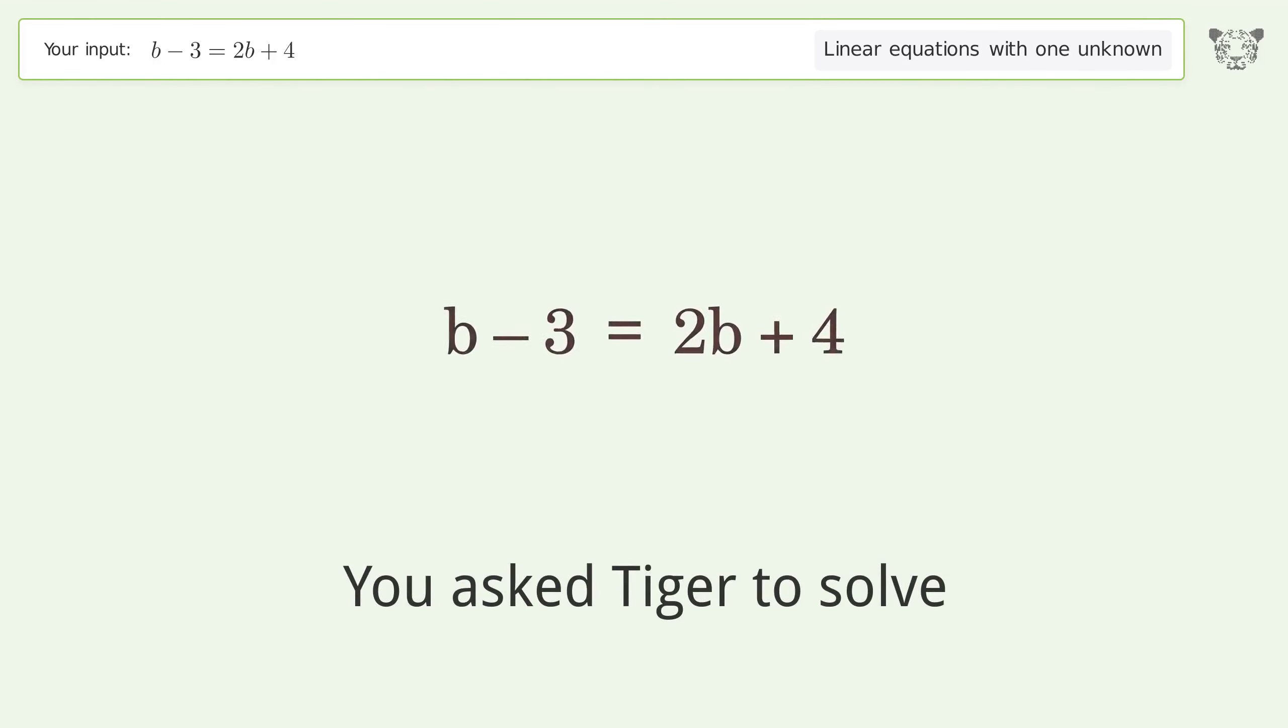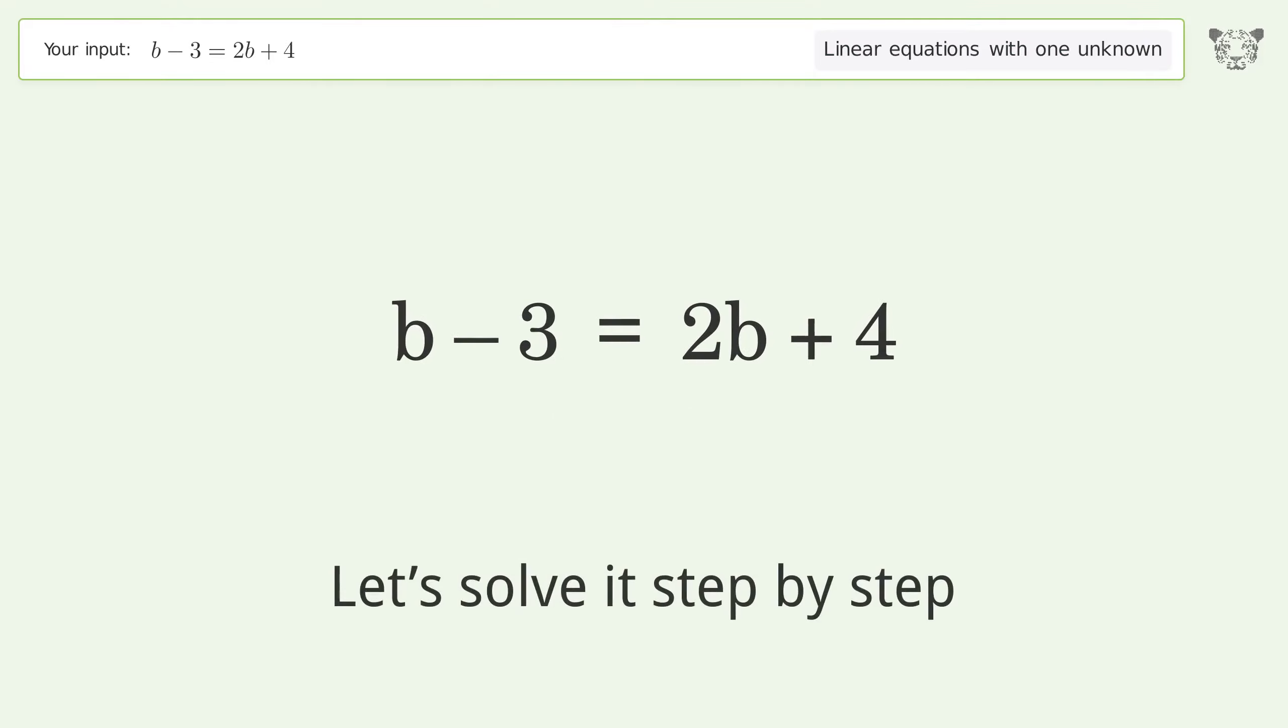You asked Tiger to solve. This deals with linear equations with one unknown. The final result is b equals negative 7. Let's solve it step by step.